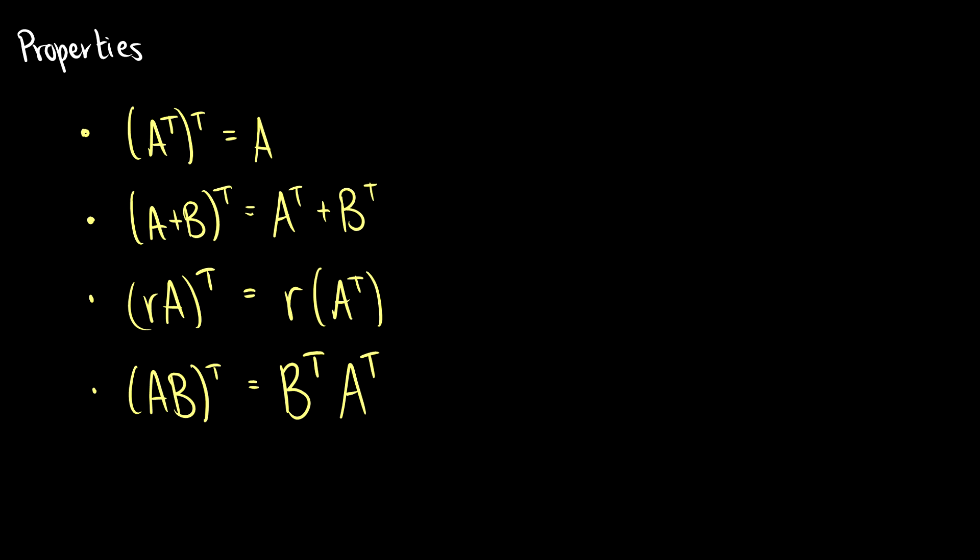Okay, so here's some properties. This video will be quick because there's not too much. If we take the transpose of the transpose, we just get the regular matrix back. And as you can see, if IJ becomes JI, then doing another transpose just takes it back to IJ for each entry.